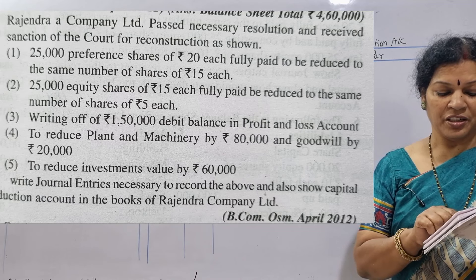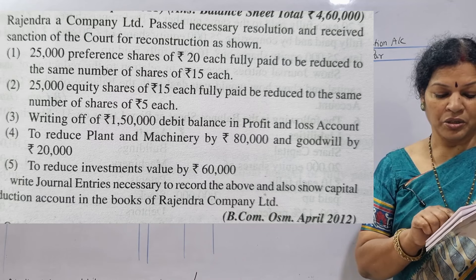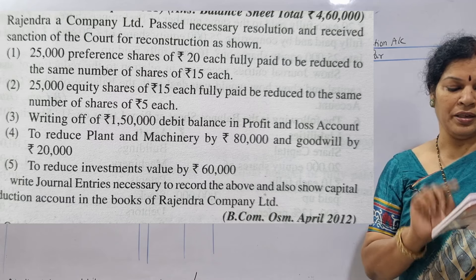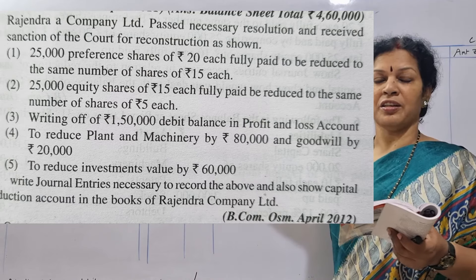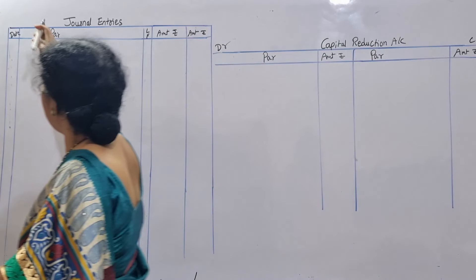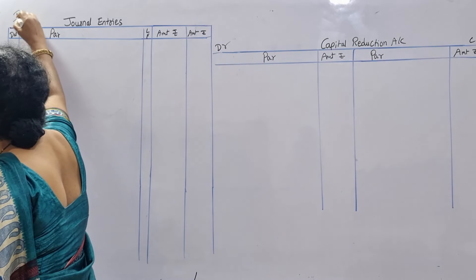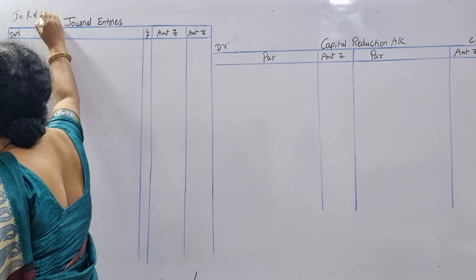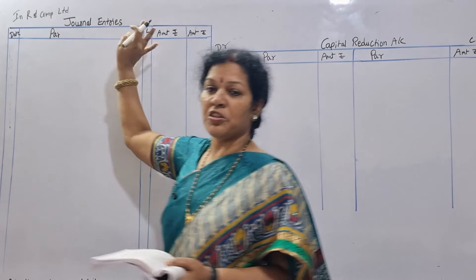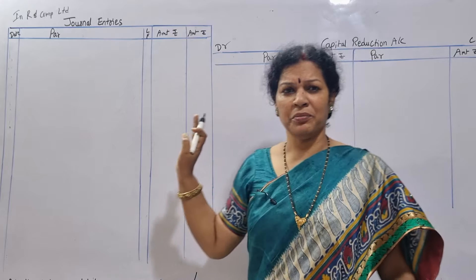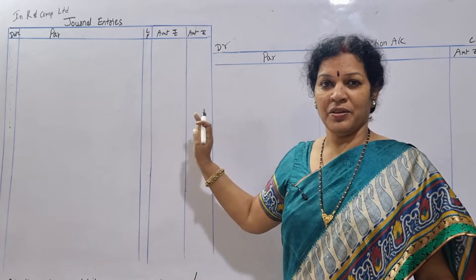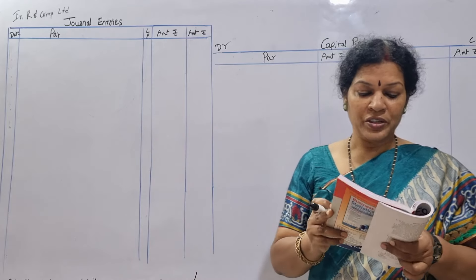What they are asking: write journal entries necessary to record the above and show the capital reduction account in the books of Rajendra Company Limited. You have to write the heading: 'In the books of Rajendra and Company Limited — Journal Entries.' The format is the same — journal entries always follow the same format: Date, Particulars, LF, Amount, Amount.